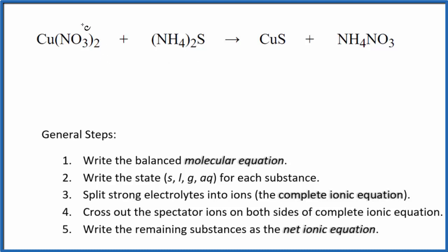So I can see that I have nitrate. I have two nitrates here in the copper 2 nitrate and only one here. I'm going to put a 2 in front of the ammonium nitrate. Now I have two nitrates. I have two ammonium ions. That's okay. I have two ammonium ions here and the copper, sulfur, copper, sulfur. This is the balanced molecular equation.